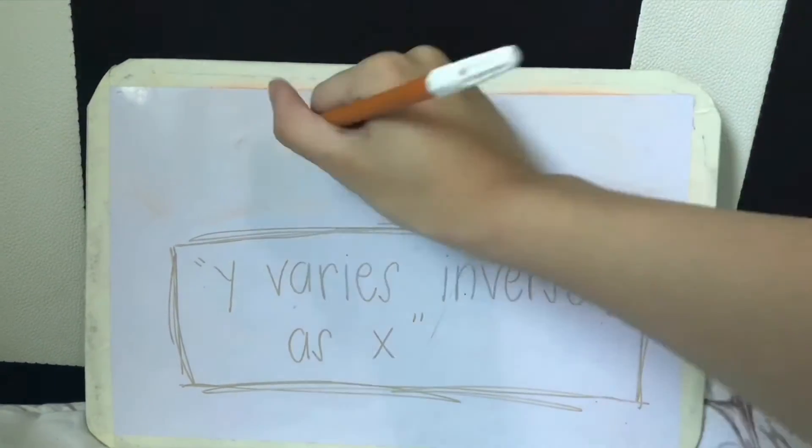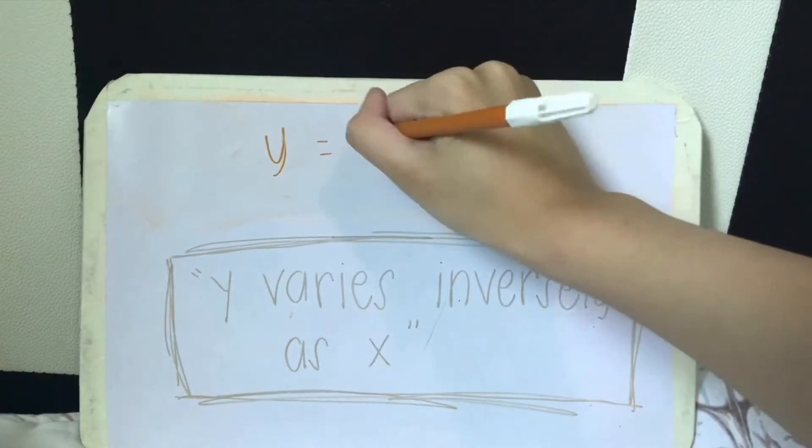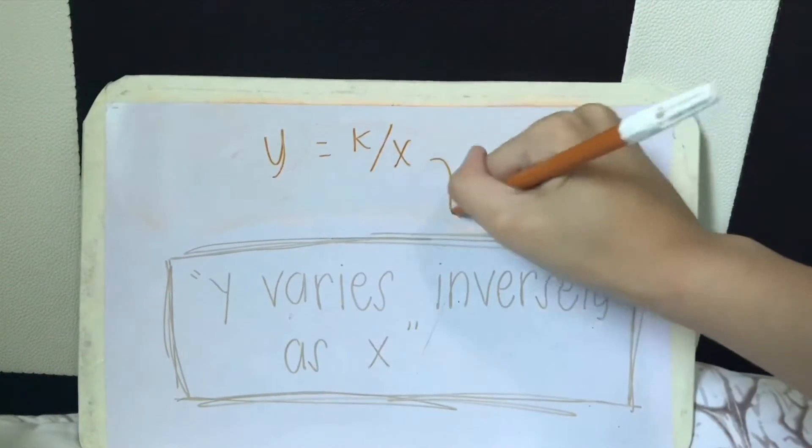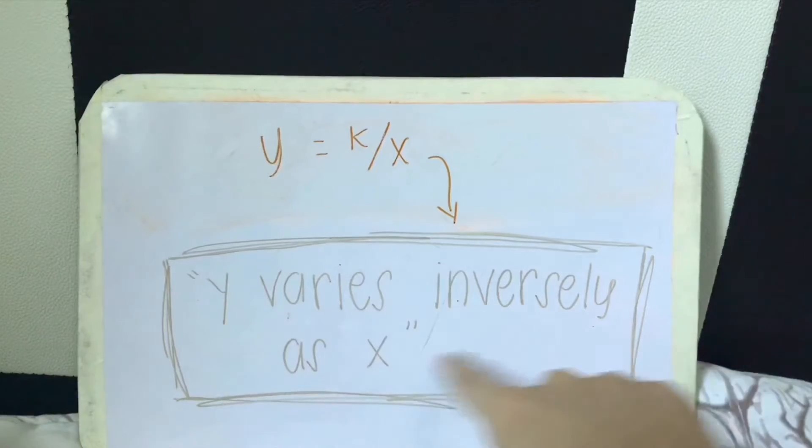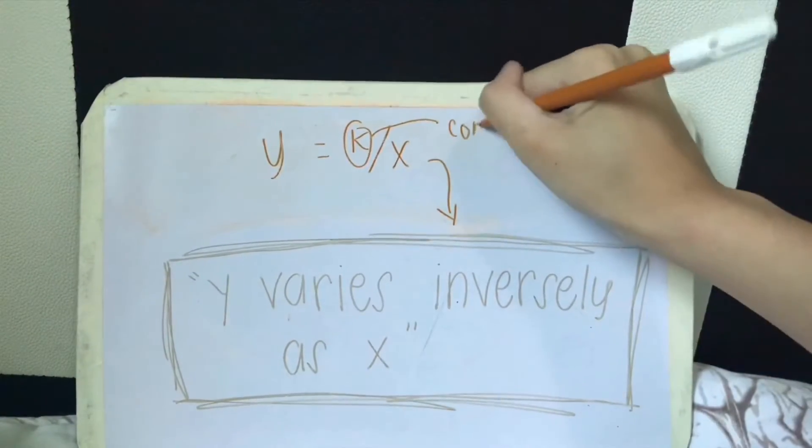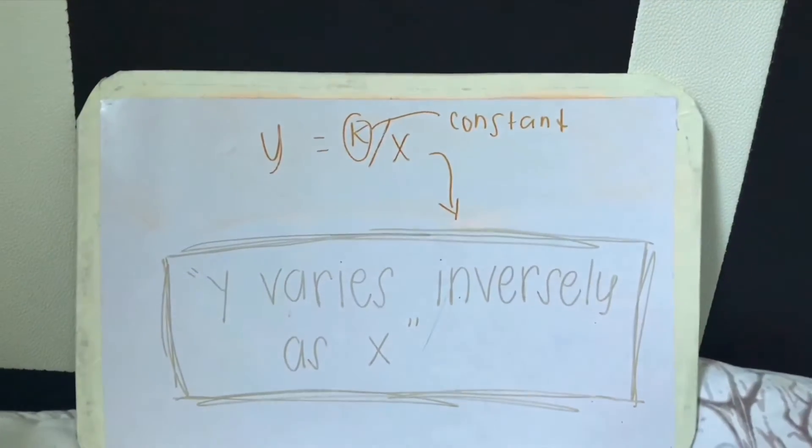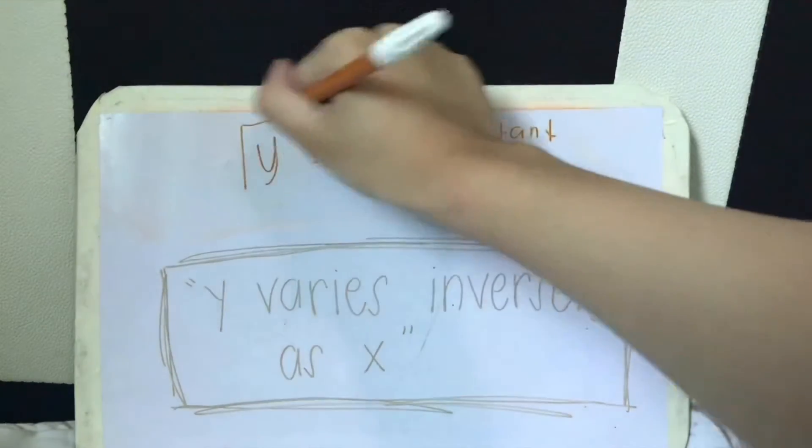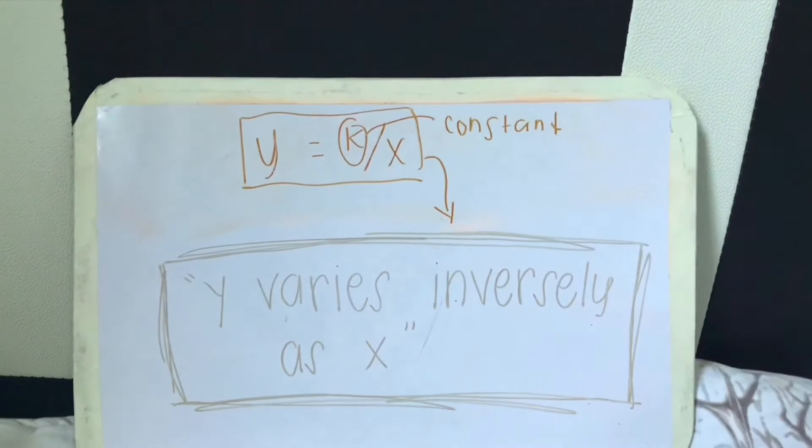The formula for solving inverse variations is y equals k over x. This is read as y varies inversely as x, and the k here stands for the constant or constant of variation. So we're going to use this formula for solving problems related to inverse variations.